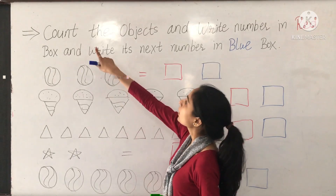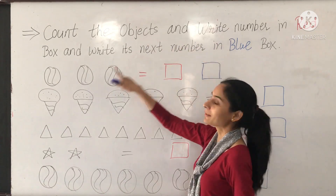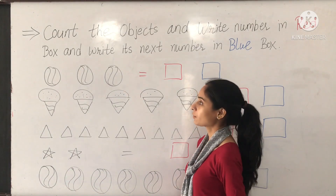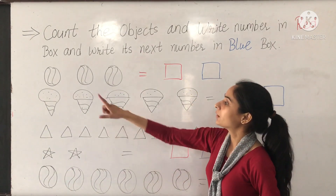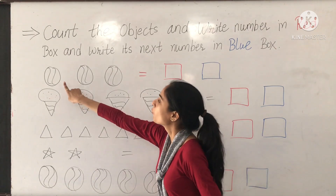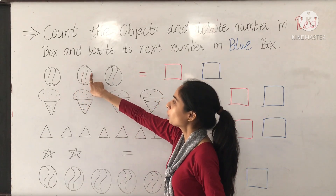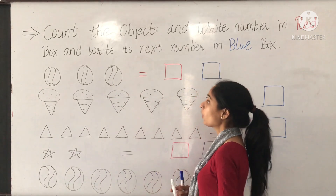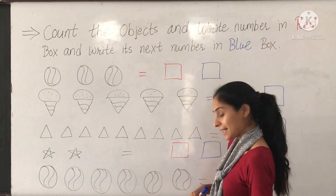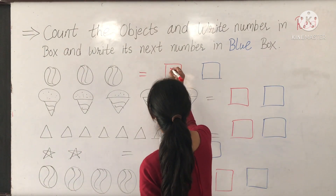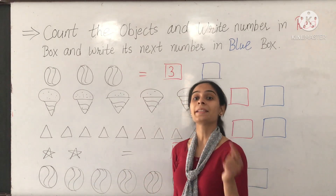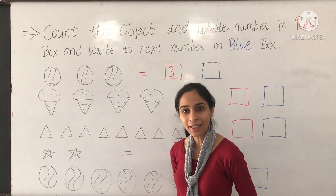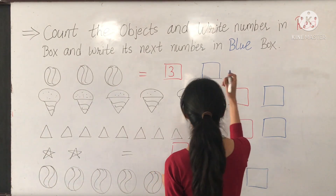Next topic is count the objects — write its number in the red box and write its next number in the blue box. First of all my dear students, we count the objects. Let us start: 1, 2, 3. How many balls are there? 3 balls. So we can write 3 in the red box. What comes after 3? 4. Very nice.